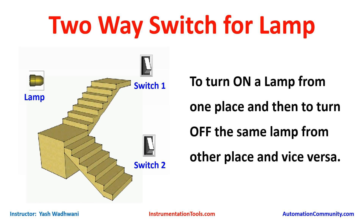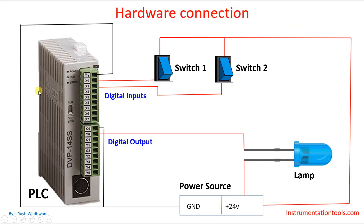Let me explain the problem definition. From the ground floor, when I press this switch, my light will turn on. After I go upstairs, from the first floor when I press this switch, my lamp should turn off. Again when I come back from the first floor and press this switch, my lamp should turn on. Finally, when I arrive at the ground floor and press this switch, the lamp should turn off again.